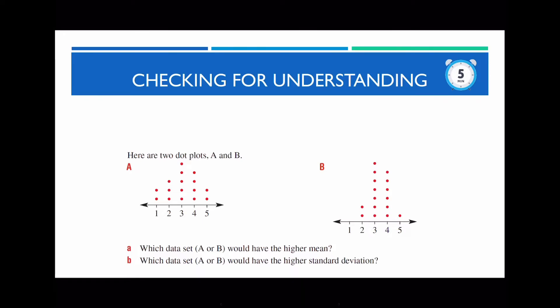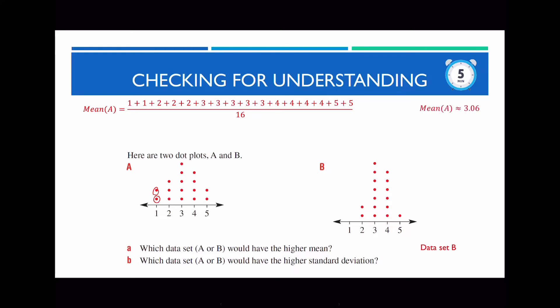If you've done part A correctly, you should have got an answer of data set B — data set B has a greater mean. The way we do this is by adding all the values found in the data set and dividing by the number of values. Dividing by 16, you're going to get a value of 3.06. Doing the same for the other data set, you're going to get a mean of 3.38. As a result, data set B has a greater mean.